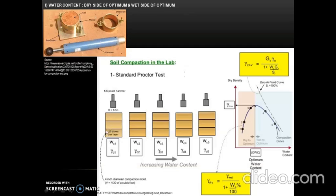In this figure, we can see that there are three layers of soil which are filled in the mould, and each layer of the soil is compacted with the help of the rammer. A certain percentage of water — let us say 4% — is added to the soil sample. For the first trial, we find out what is the water content and what is the dry density.